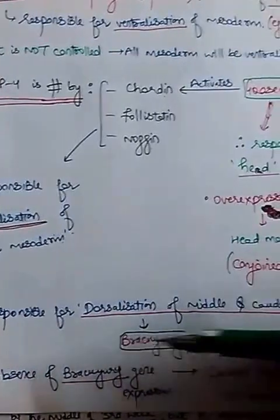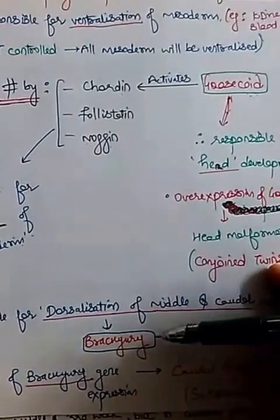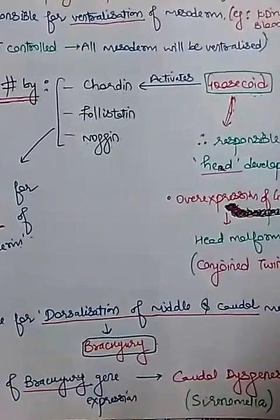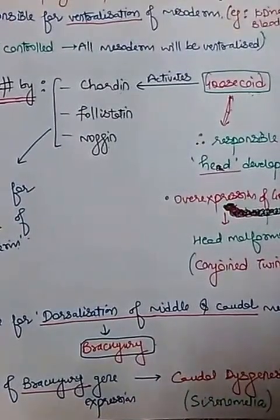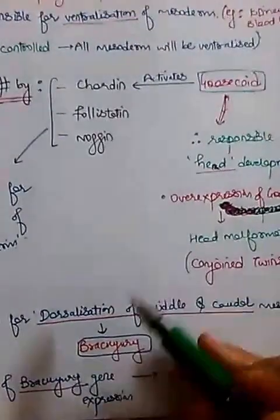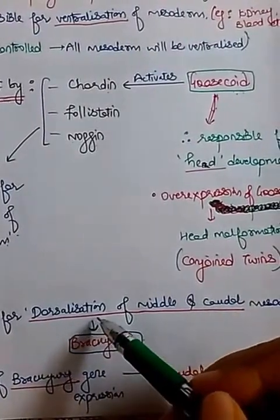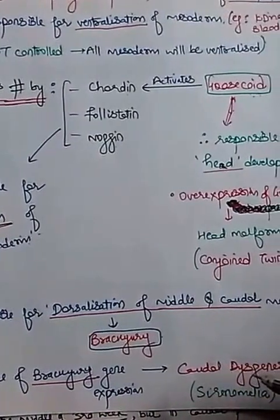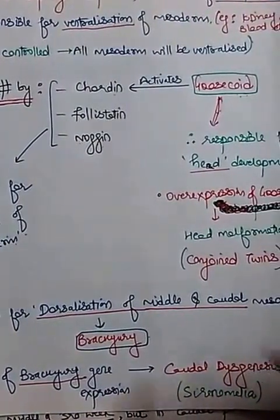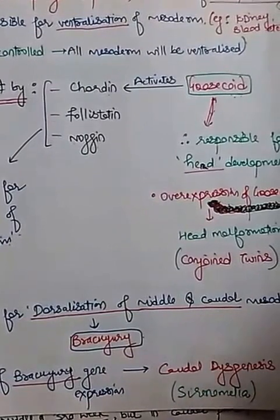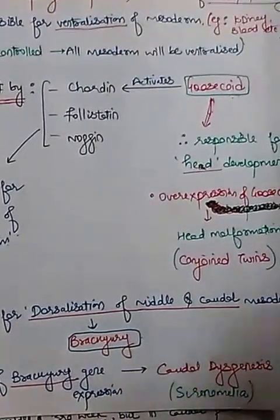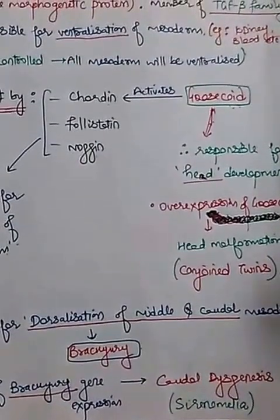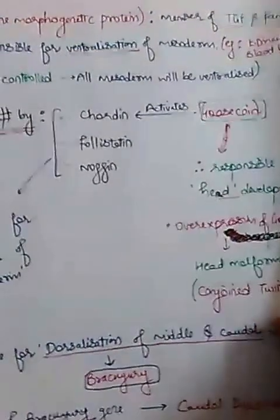The gene responsible for dorsalization of the middle and caudal mesoderm is the brachyury gene, which is also under the control of FGF8. Absence of brachyury gene expression leads to caudal agenesis, causing malformation in the caudal part, which is known as sirenomelia. We will study this in more detail later.